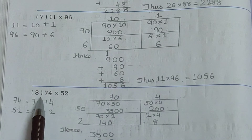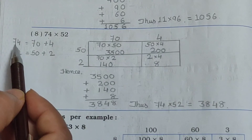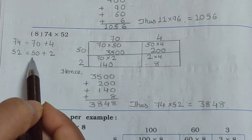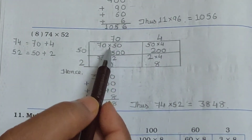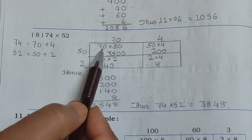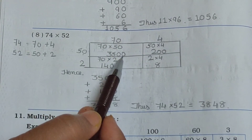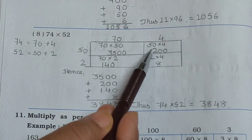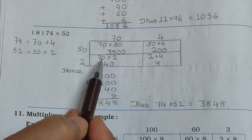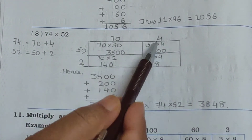Now see the 8th one: 74 multiplied by 52. 74 is equal to 70 plus 4, and 52 is equal to 50 plus 2. Arrange in the box: here 70 and 4, and here 50 and 2. 70 multiplied by 50 gives 3500. 70 multiplied by 2 gives 140. 4 multiplied by 50 gives 200. 2 multiplied by 4 is 8.